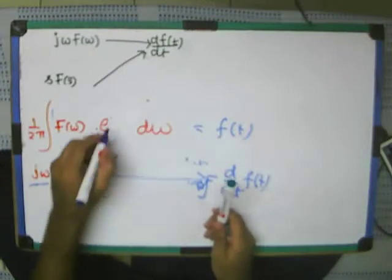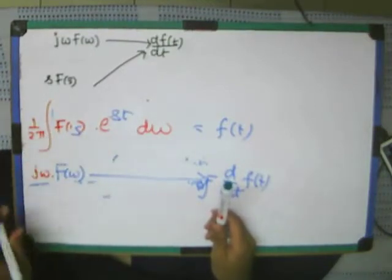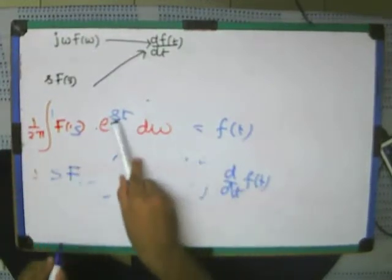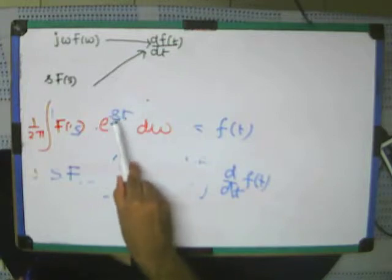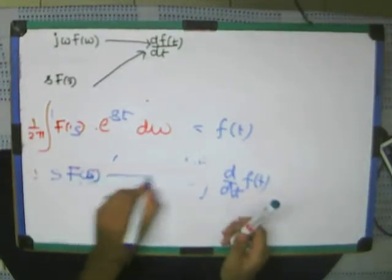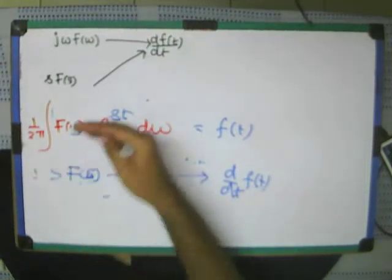Similarly for the inverse Laplace transform, F(s)e^(st). If you just derivate it by time, then simply s times F(s), because when I derivate it by time, this s part is only left. s times F(s) is inverse Laplace transform of df/dt. So as simple as that.